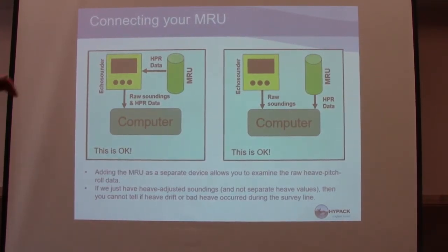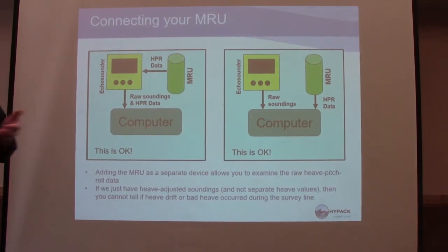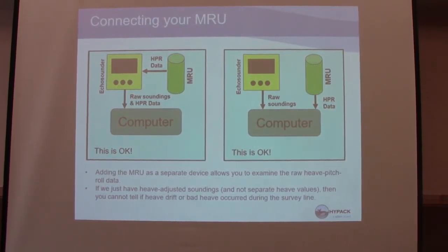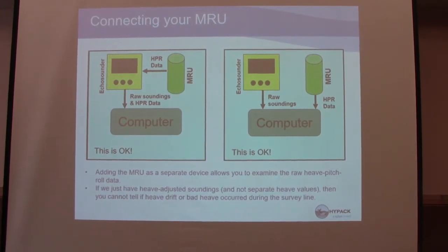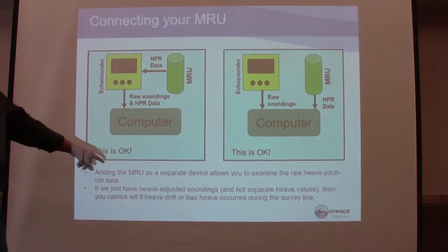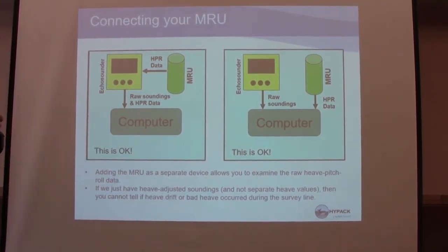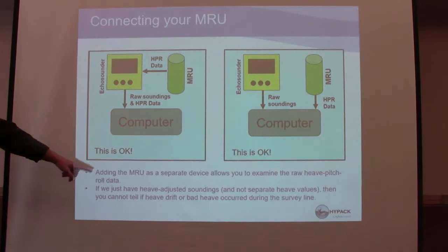In Sigma Metator you can go in and change your offset — say your MRU was a foot off, not two feet — and it'll recalculate. Having it as a separate device allows you to examine the raw heave pitch and roll data. Correction for heave drift: the heave compensator jumps up high and settles down slowly. We talked about heave drift earlier — the sensor has a tendency to drift.